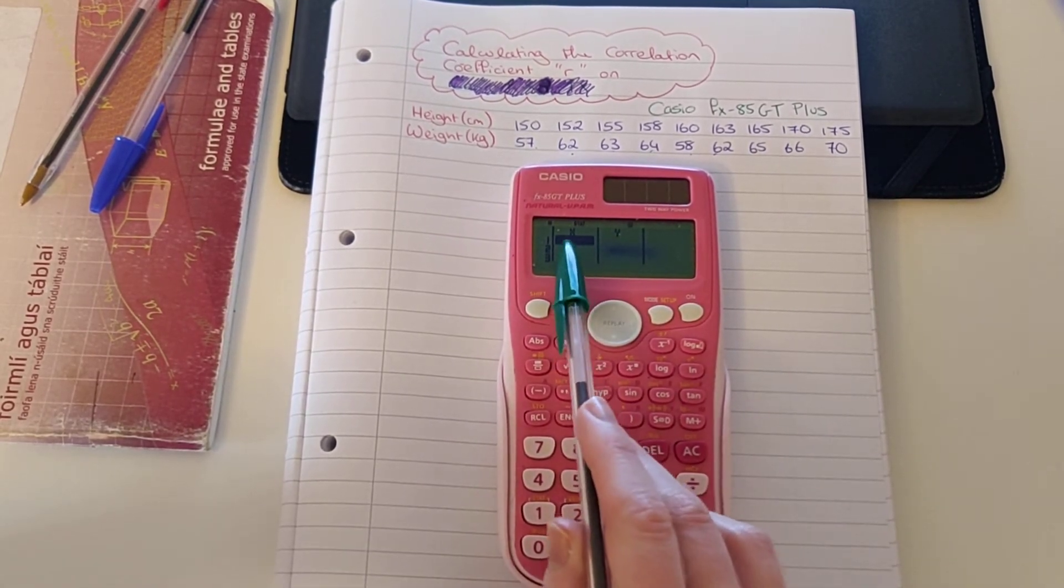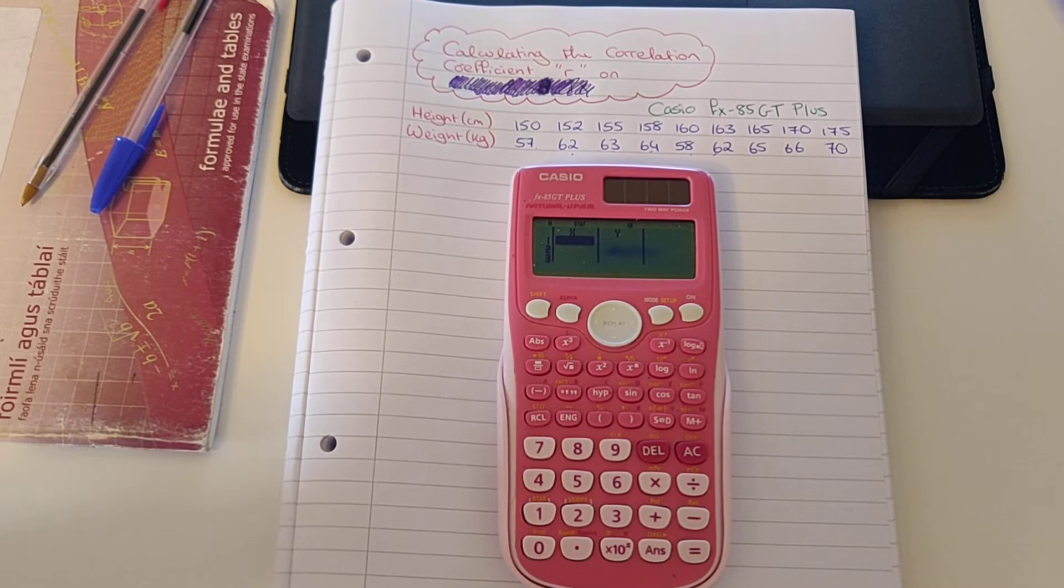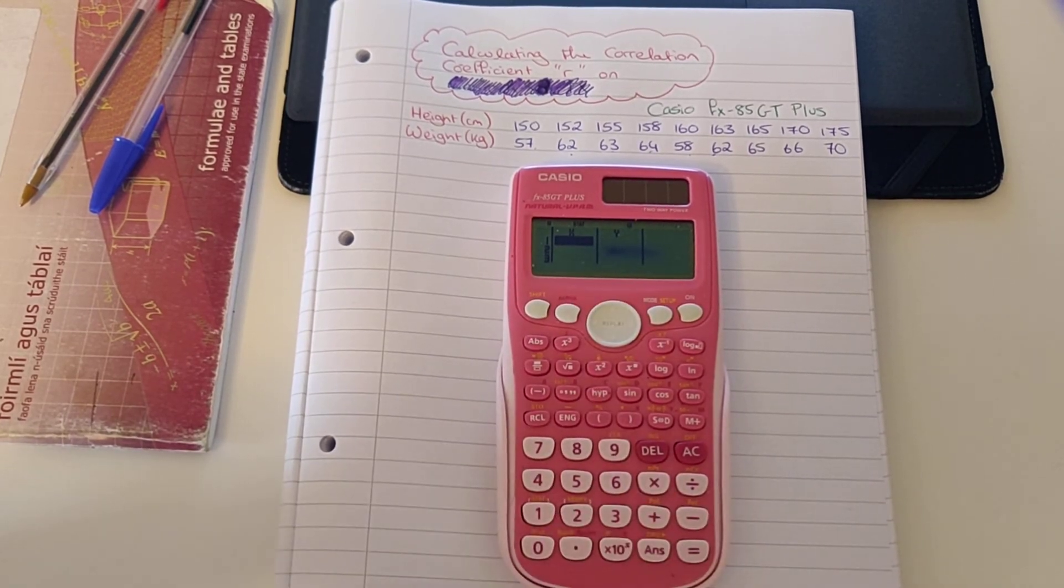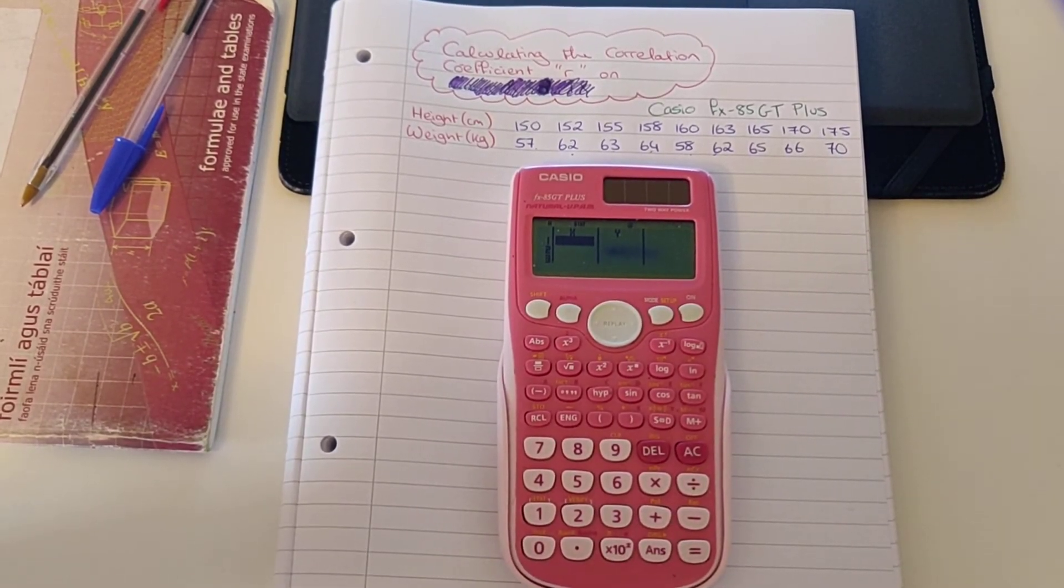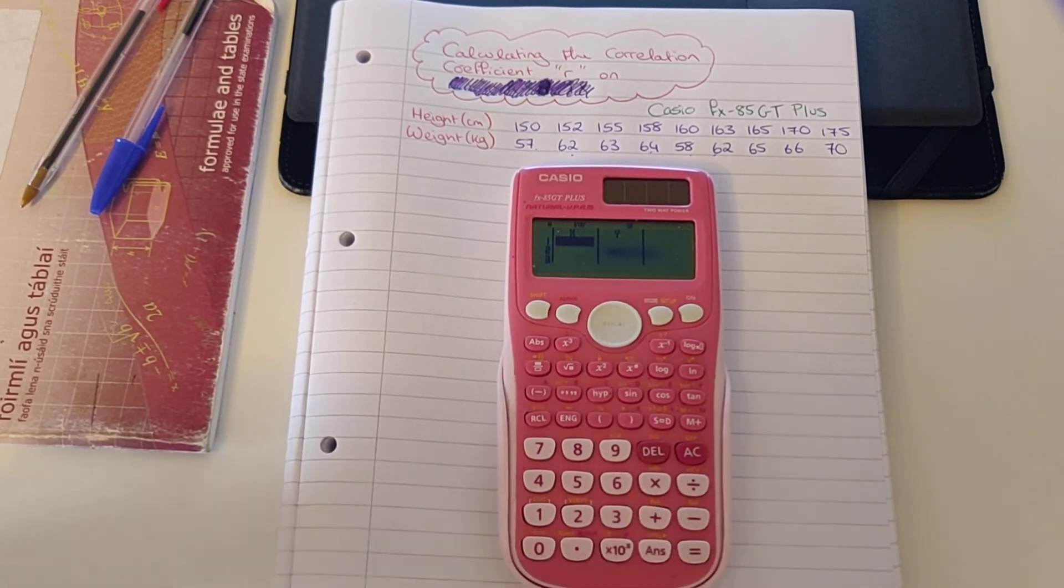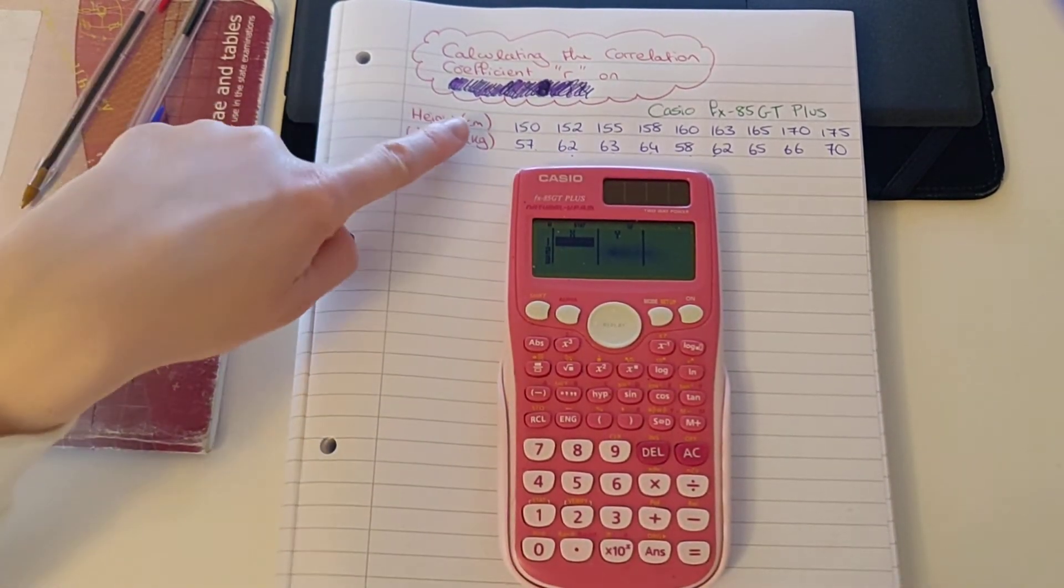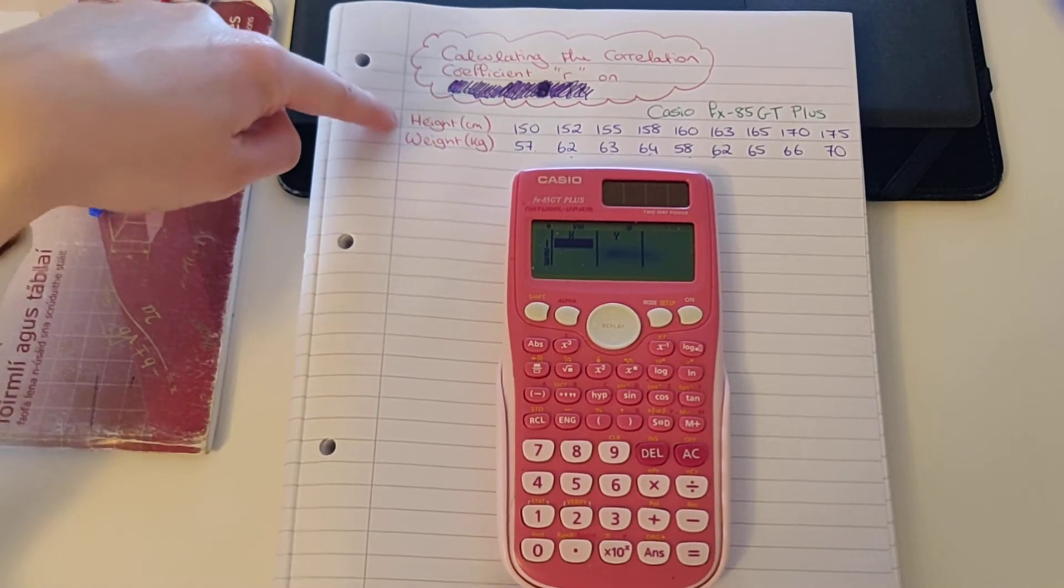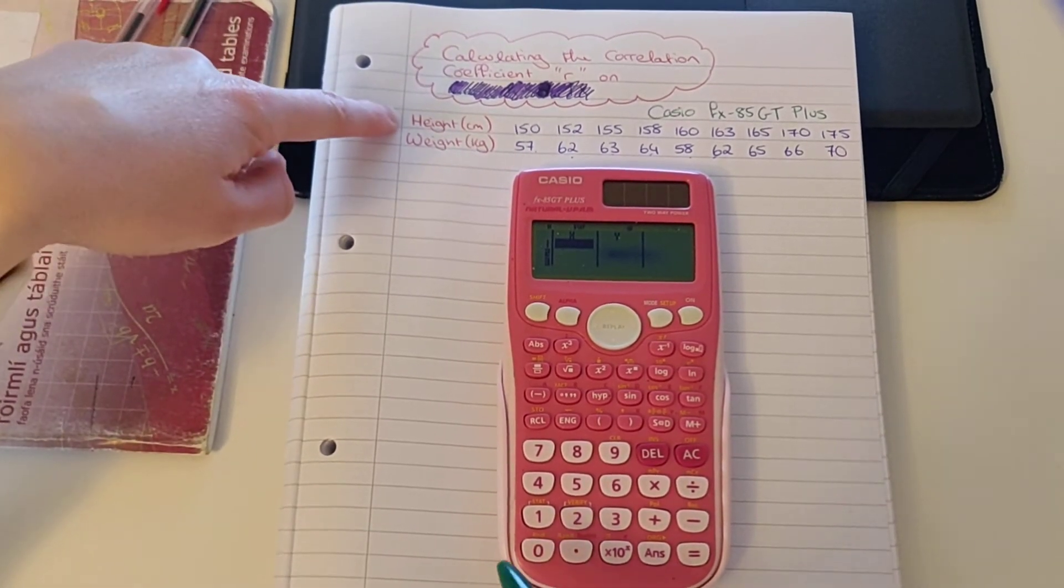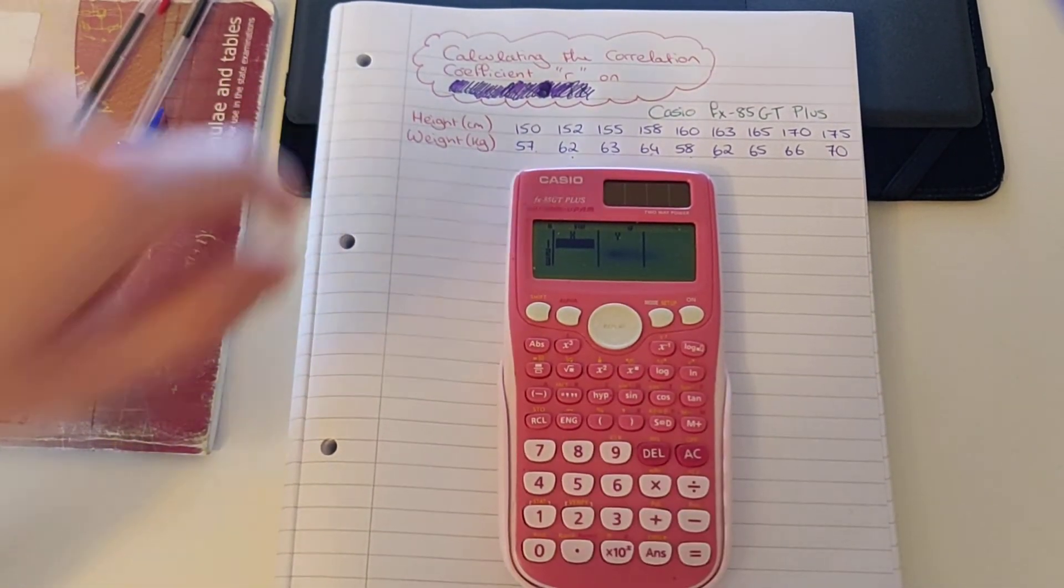Now, whatever variable is on the x-axis on your scattergraph is going to be typed into the x column, and whatever quantity is on your y-axis on your scattergraph is going to be typed into the y column. I can see that because the height is consistently increasing, that will be on my x-axis. So I'm going to type that into my x column here.